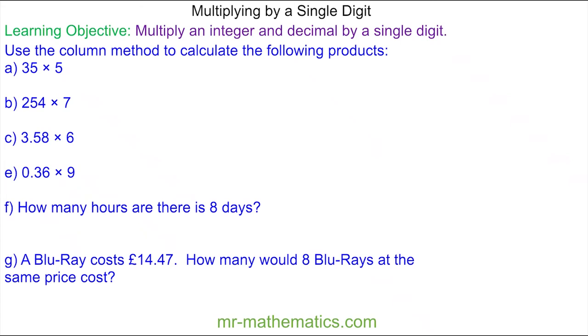Welcome to our lesson on multiplying by a single digit. We're going to use the column method to work out questions A through to G. We'll begin with question A where we have 35 multiplied by 5.